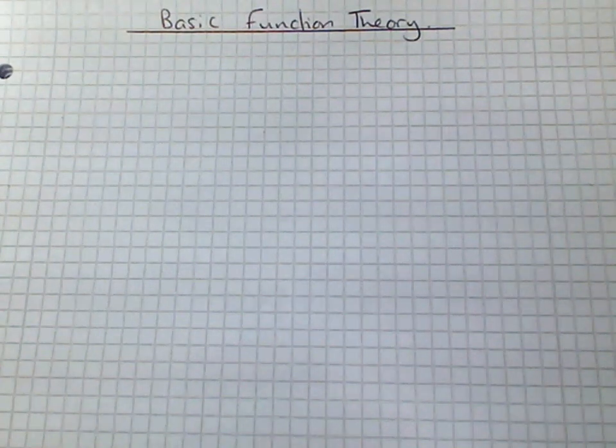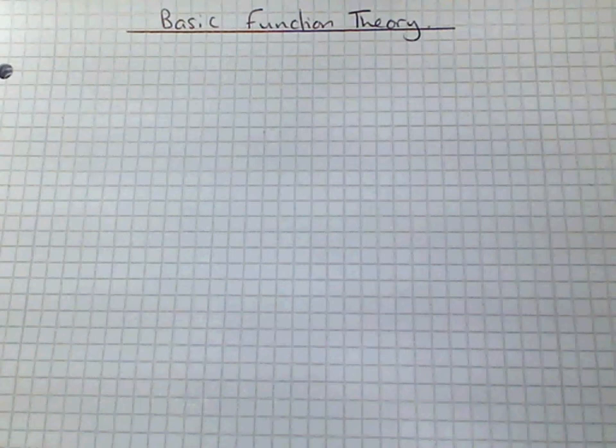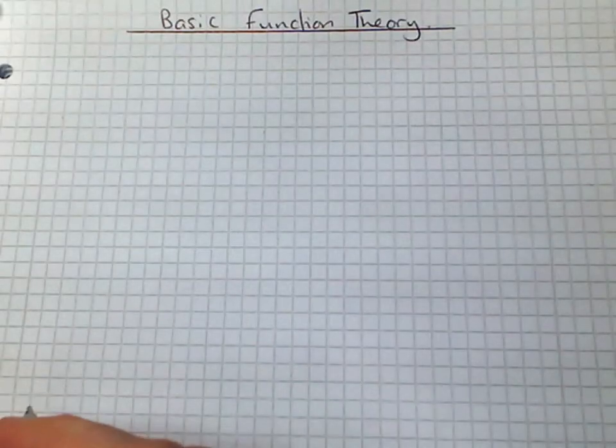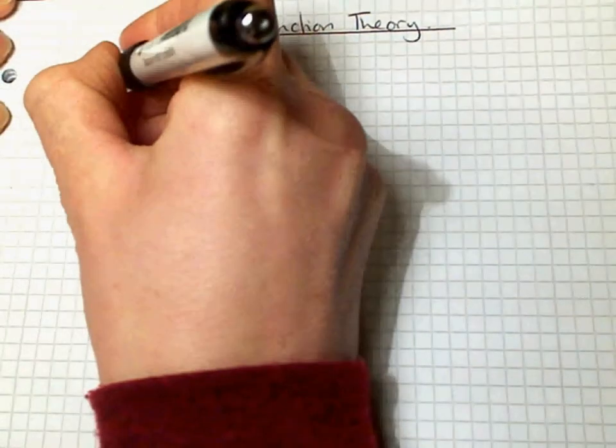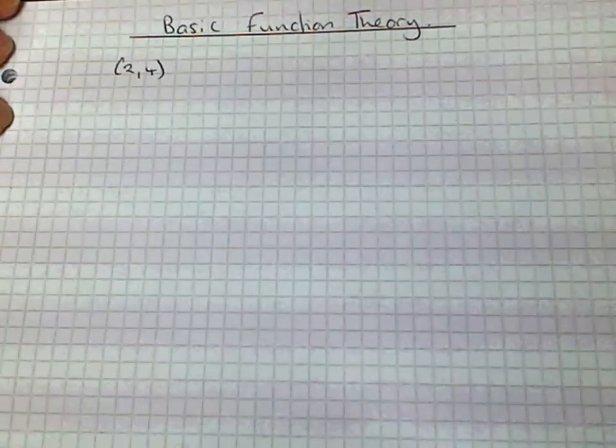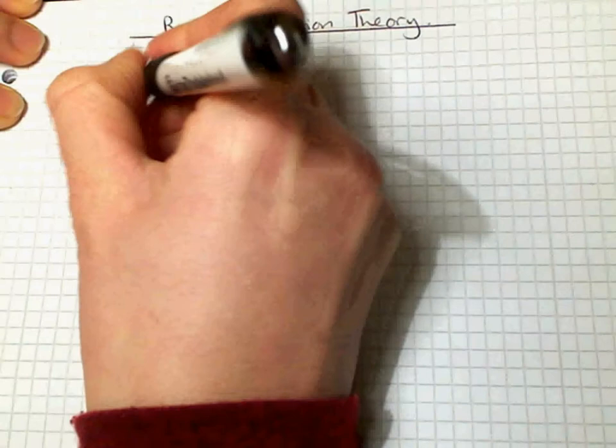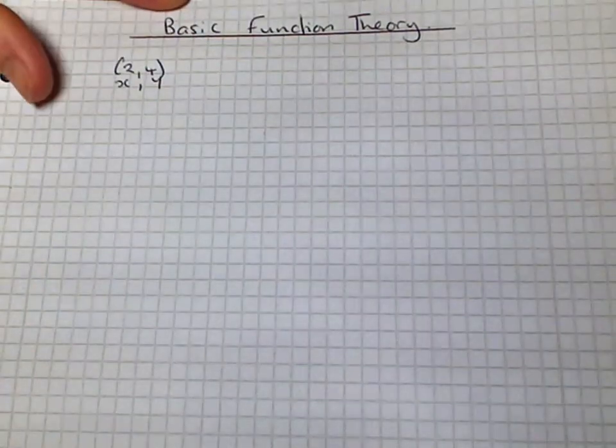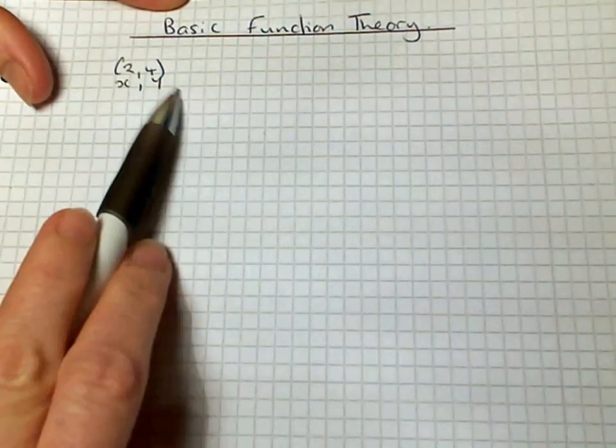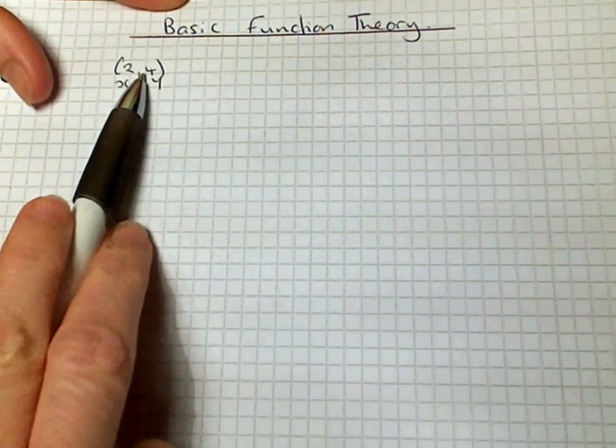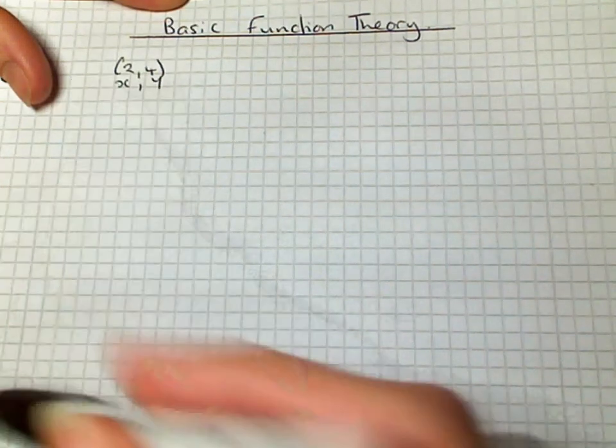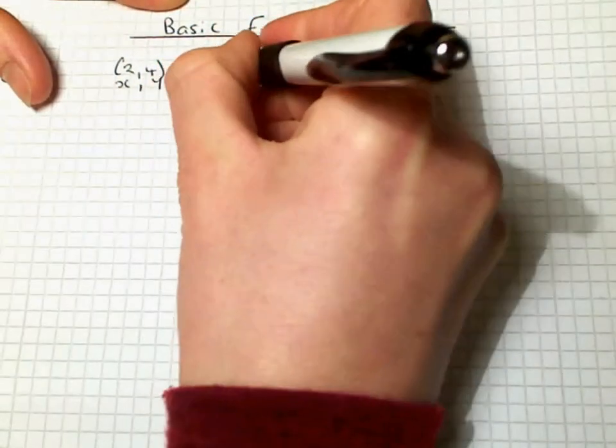Basic function theory. If we take a look back at coordinate geometry and take a point such as 2, 4, we know how to plot that and we know that it is made up of an x value and a y value. The x value being our 2 and the y value being our 4. Such a point is called an ordered pair.